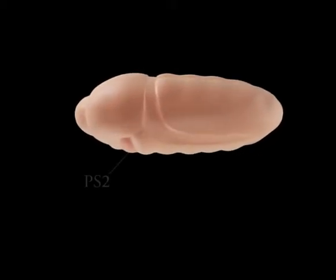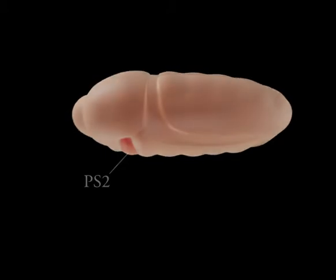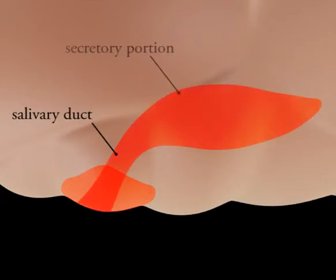The salivary gland of Drosophila melanogaster is a paired secretory organ that forms from the ventral ectoderm of parasegment 2 in the Drosophila embryo. The gland forms from a placode and is composed of a duct portion and a secretory portion.